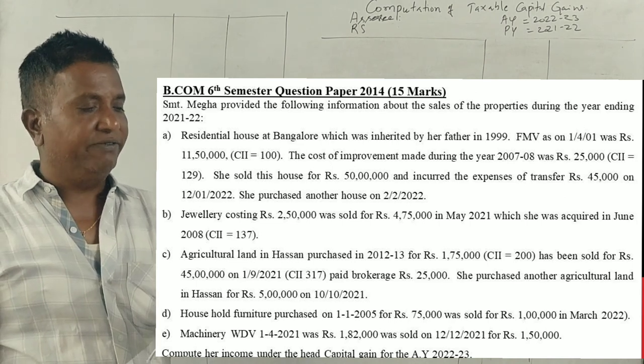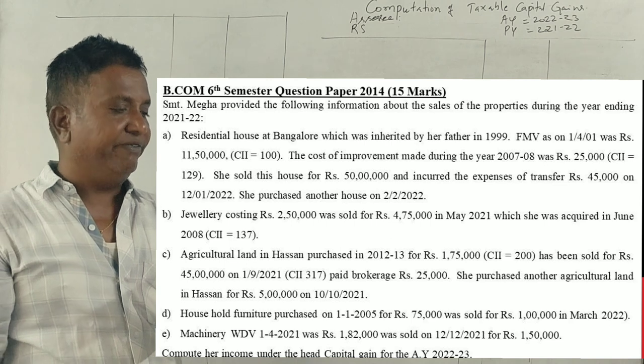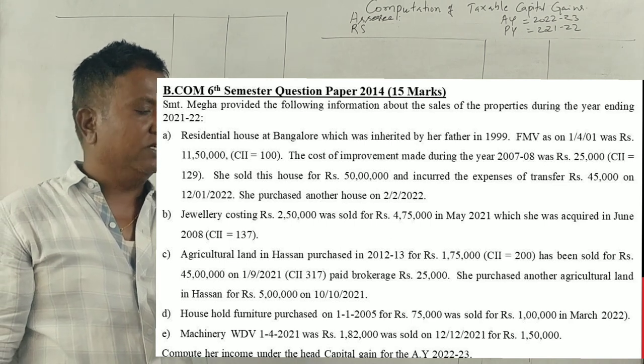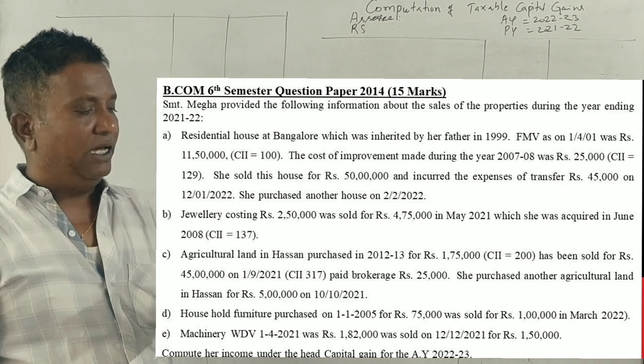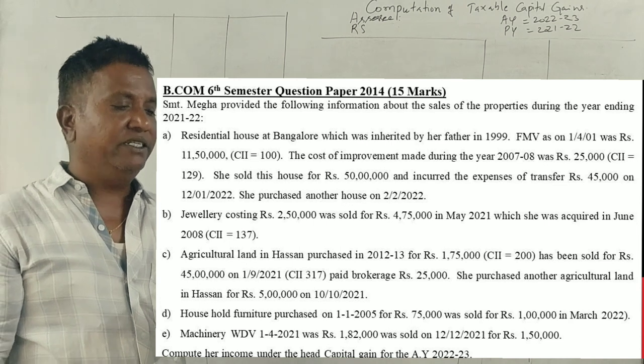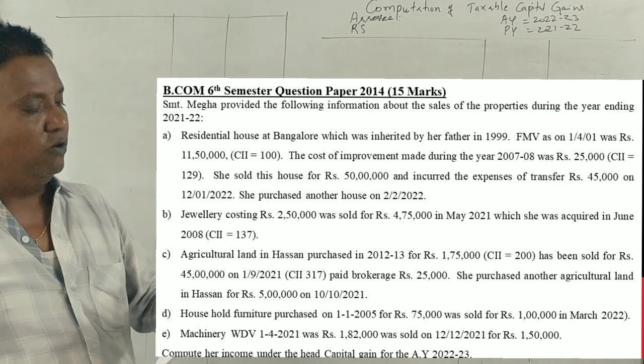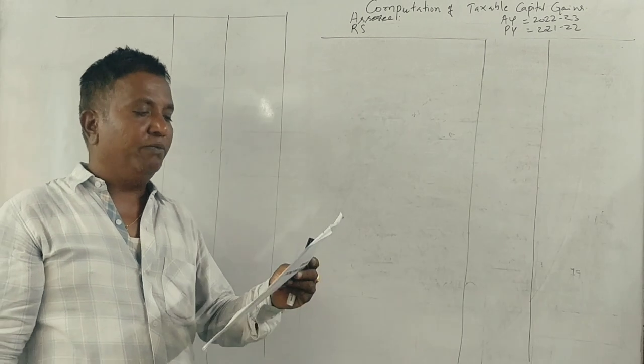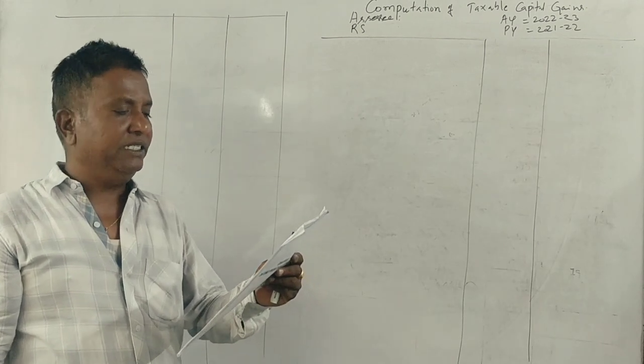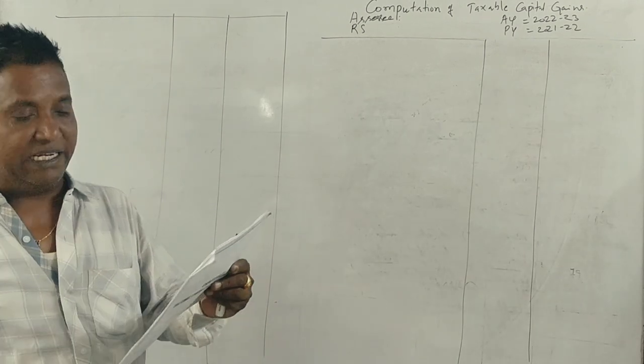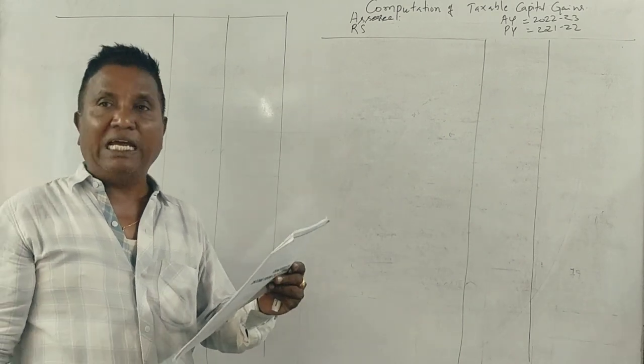Jewelry costing 2,50,000 was sold for 4,75,000 which she acquired in 2008. Agricultural land in Haveri purchased in 2012-13 for 1,75,000 has been sold for 45,00,000 and paid a brokerage of 25,000. She purchased another agricultural land in Haveri for 5,00,000.